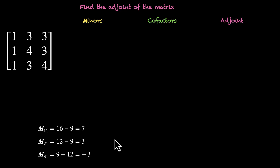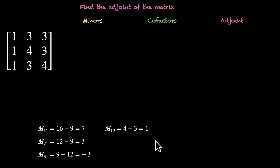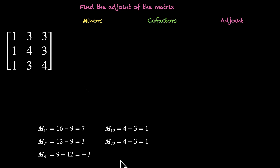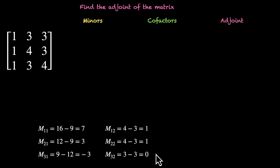For M12, we have 4 minus 3, that's 1. M22 is also 4 minus 3, that's also 1. M32 is going to be 3 minus 3, which is 0.